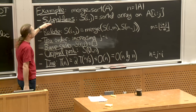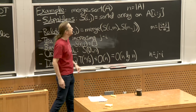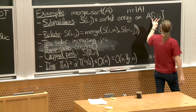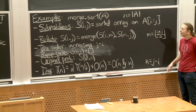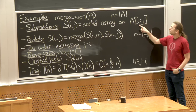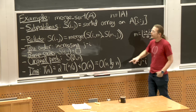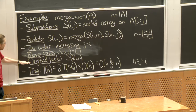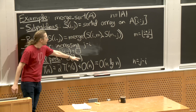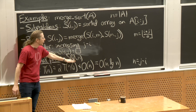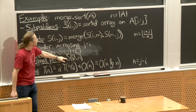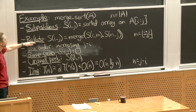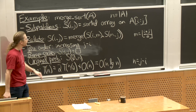Let's move to another problem that doesn't fit recursion well initially but can be made better — computing Fibonacci numbers. This is really just a toy problem to illustrate the powerful idea of memoization. Given a number n, we want to compute the nth Fibonacci number. The recurrence is f_n = f_{n-1} + f_{n-2}, with base case f_1 = f_2 = 1.